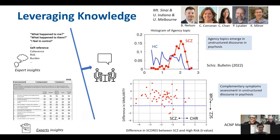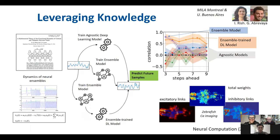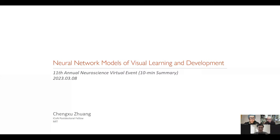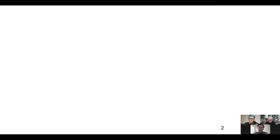Thank you very much. Now I will start my talk — a quick summary of the content I gave in the 30-minute recording. In this talk I will discuss neural network models of visual learning and development, and specifically how we can reverse-engineer the objective function used to train models so that the models will learn and develop just like how humans and other animals do. I focus on the visual system.